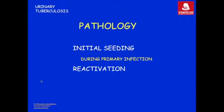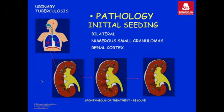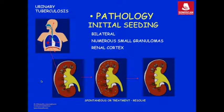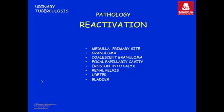The pathology of tuberculosis happens in two phases: one is during the initial seeding which occurs during primary tuberculosis infection, and next it happens as reactivation. During initial seeding, it is in the kidney, bilateral, and occurs as numerous small granulomas in the renal cortex. These granulomas either spontaneously or on treatment totally resolve. In the reactivation phase, whenever the immunity of the patient goes down, there is reactivation of the granulomas in the kidney.